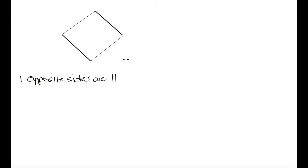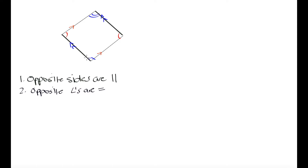The first property of parallelograms is that opposite sides are parallel. In our rhombus diagram, this side is parallel to the opposite side, and the other pair of opposite sides is also parallel. Another property is that opposite angles are equal, so this angle is equal to the angle opposite it, and the same goes for the other pair of opposite angles.